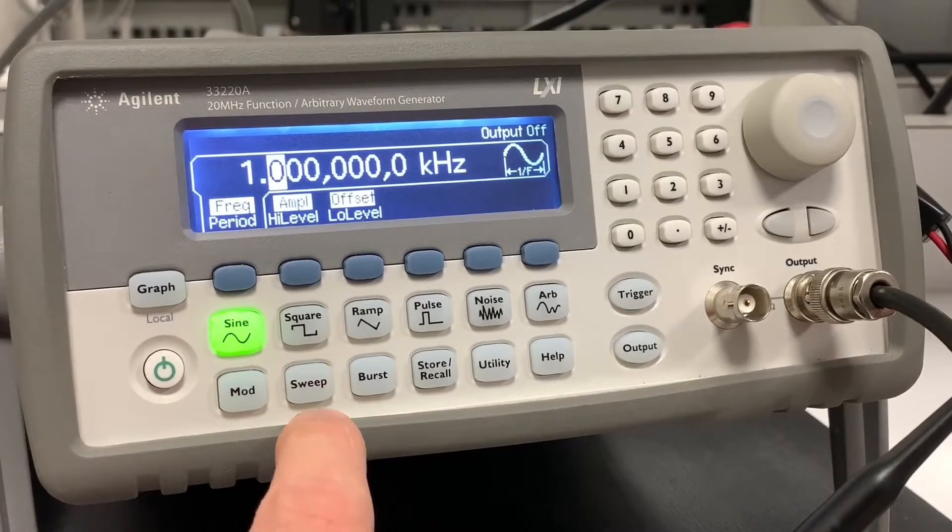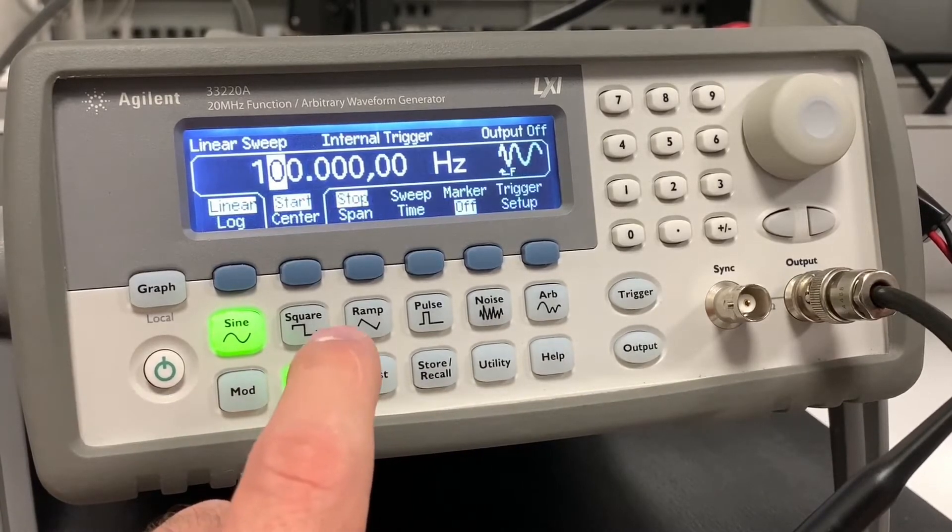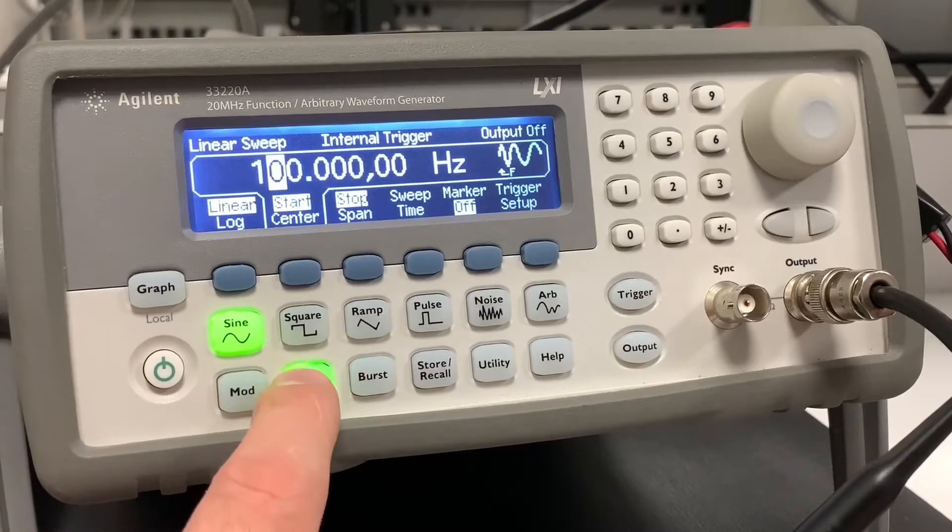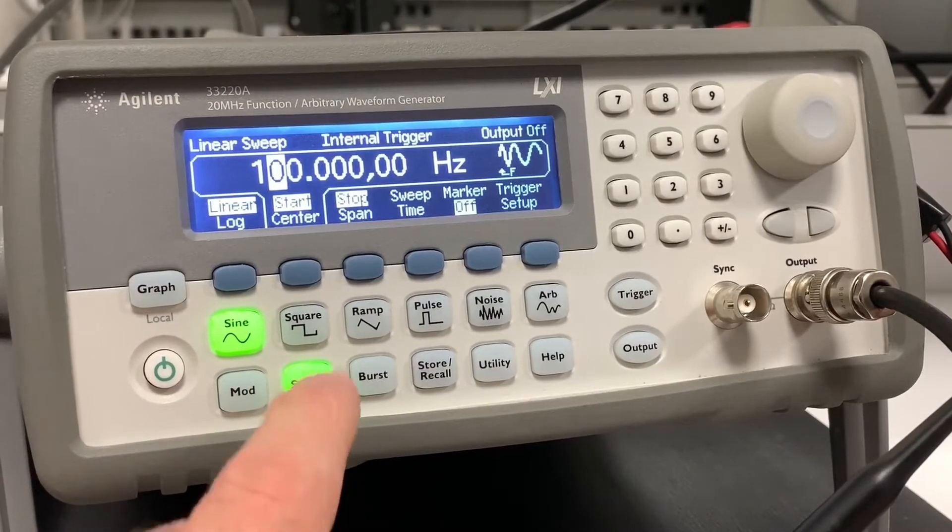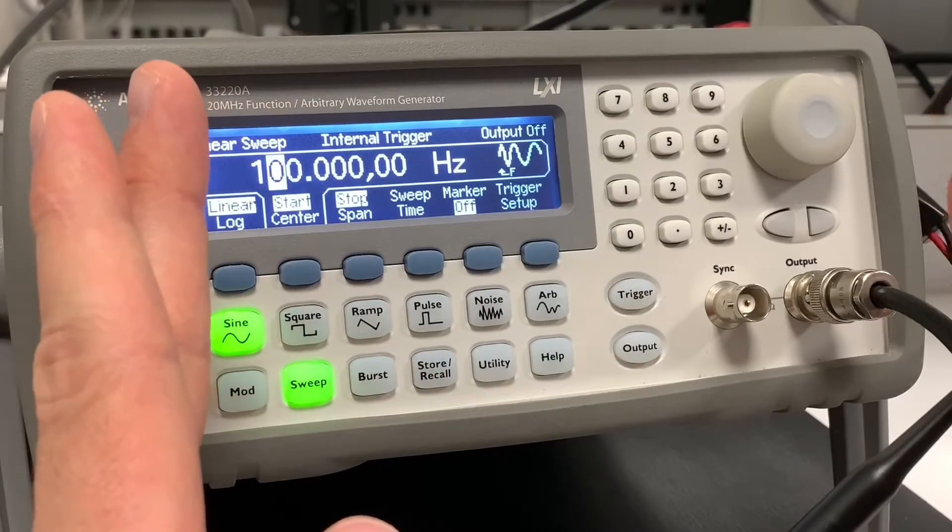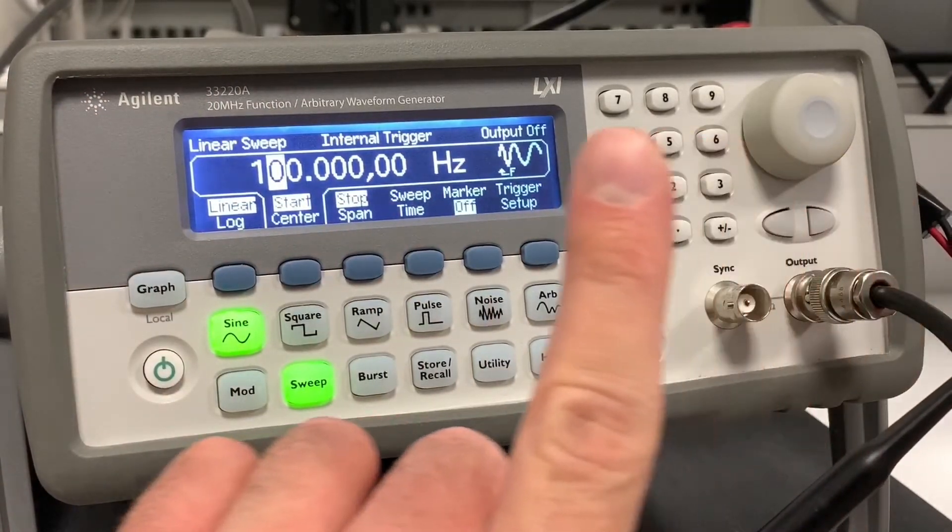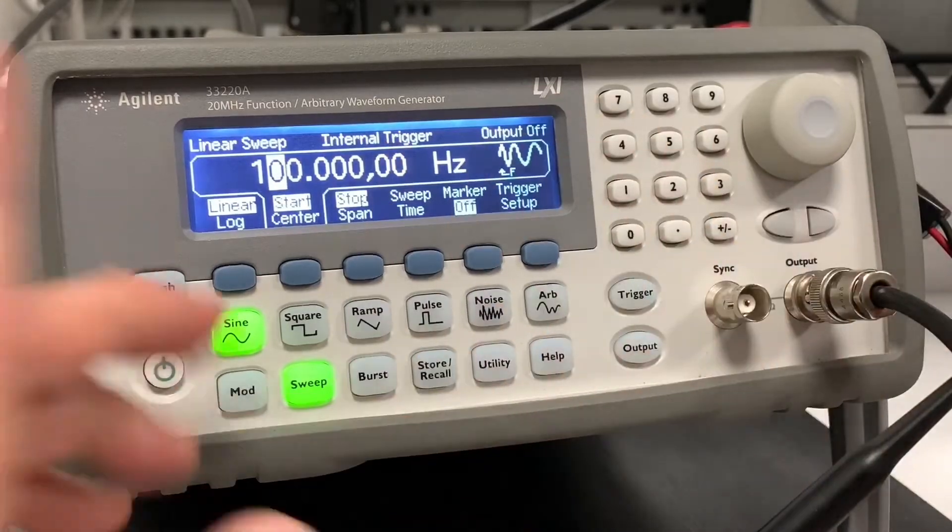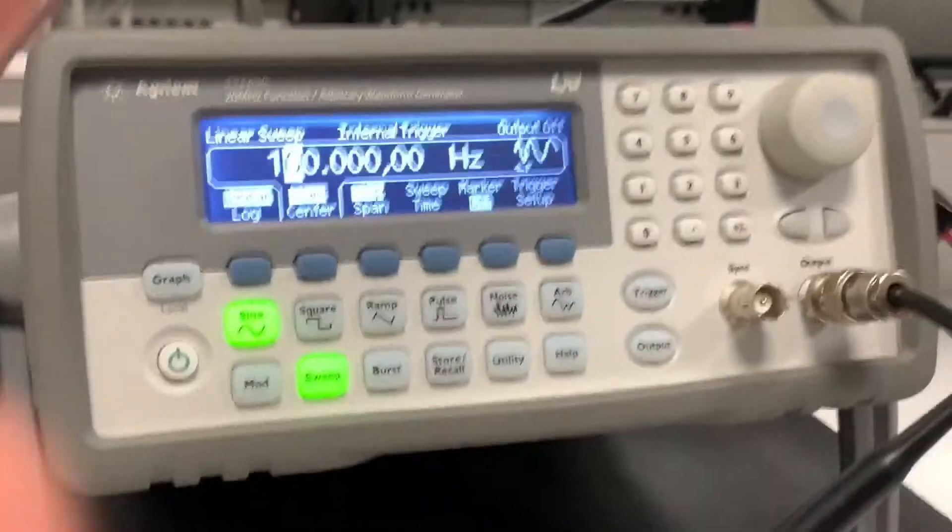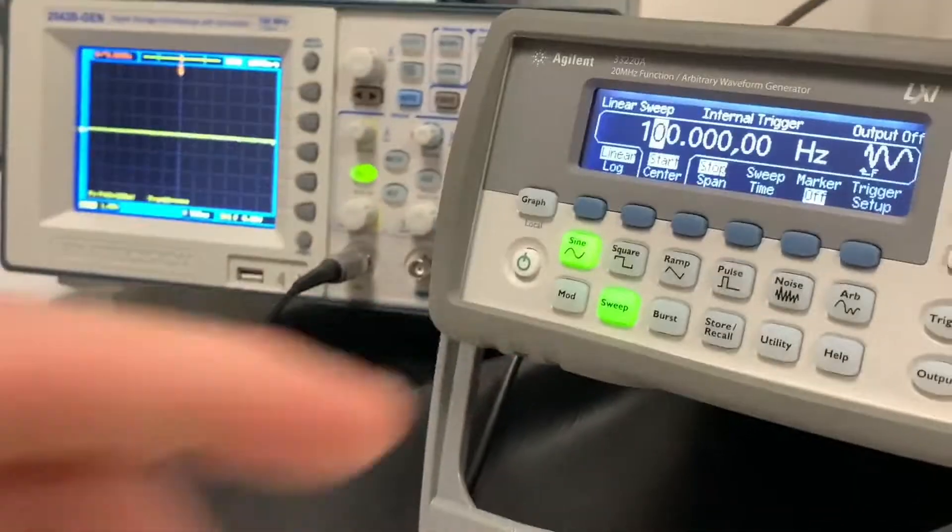Sweep is probably the most useful function of function generators. And what sweep does is it programs in a certain beginning and end, and it will automatically increase the frequency and then decrease the frequency, depending on what is in those limits. So that might sound complicated, so I'll try and demonstrate it.